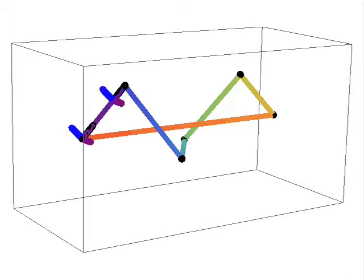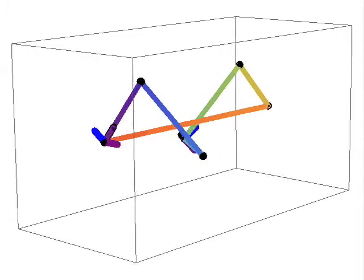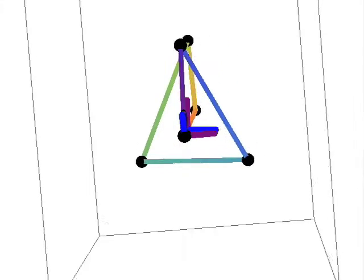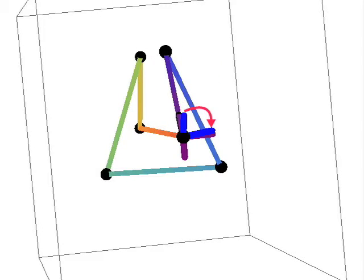When a frame is parallel transported about a closed loop, the result is a rotation about the tangent vector. The angle of this rotation is known as the holonomy, an important concept also needed for our derivation.